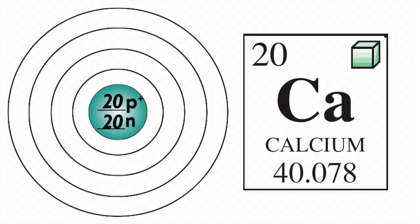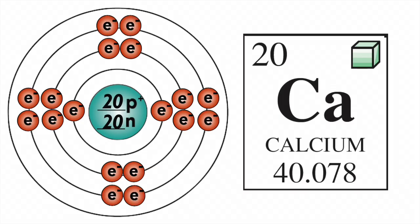As always, we'll put the protons and neutrons in the nucleus. Then, following the octet rule, we'll put two electrons in the first orbital, eight in the second, eight in the third. That accounts for 18 electrons. The last two go into the fourth orbital.